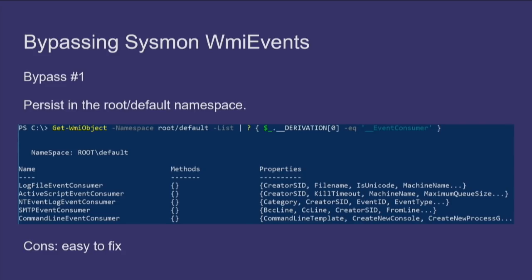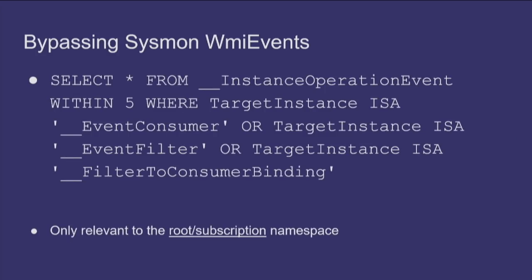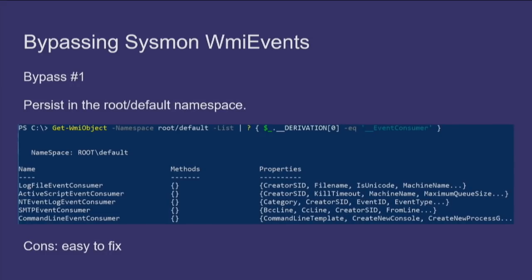I know from previous experience that it's not just the root\subscription namespace where WMI persistence artifacts actually live — they also live in the root\default namespace. Microsoft, the developers of Sysmon, happened to neglect this one. Fortunately, that will be a really easy fix — they would just put the same event query bound to the root\default namespace. Autoruns already captures root\subscription and root\default based persistence. I wouldn't be extremely satisfied using root\default on an operation though, partly because I'm burning it right here, and because it's easy to fix, so it may not last forever.